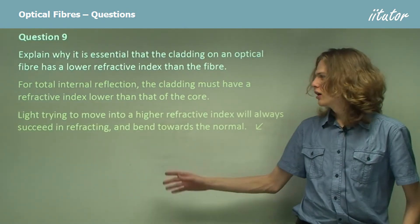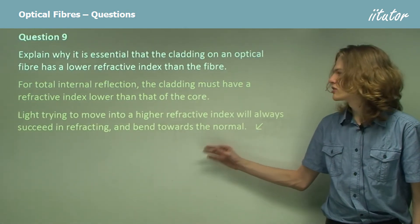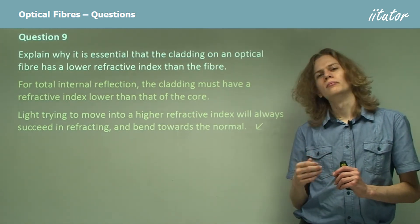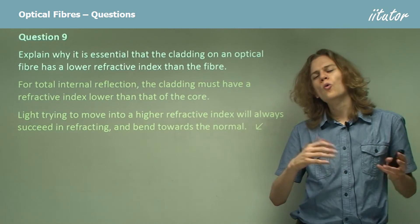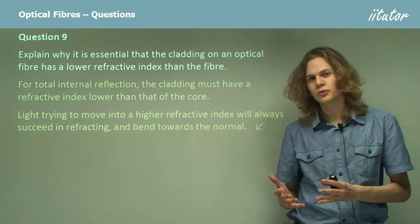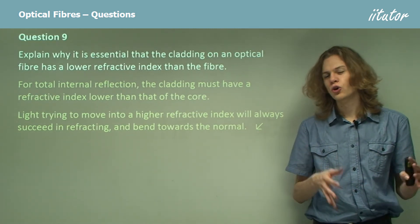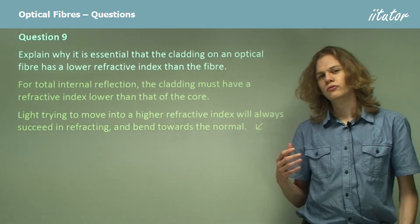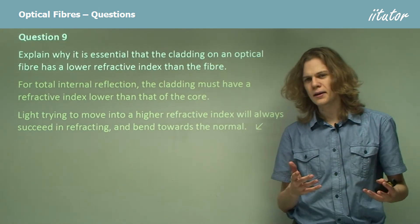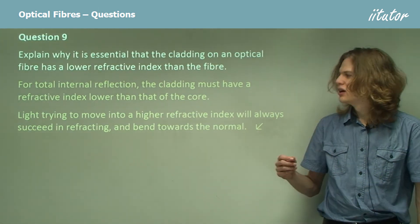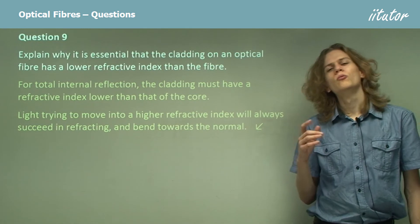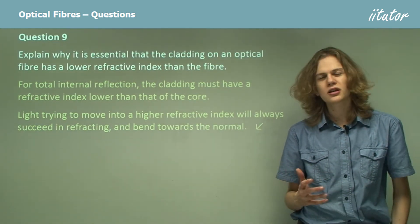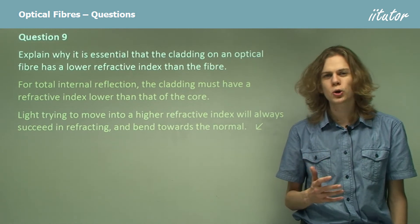The reason is that light trying to move into a higher refractive index will always succeed in refracting — if we're moving light from air into water, there will always be an angle of refraction that's possible, so we can never get total internal reflection. On the other hand, if we're moving from glass into air, or water into air, or glass into water, there will be some angle for which there's no possible angle of refraction, and in that case the light will be totally internally reflected.